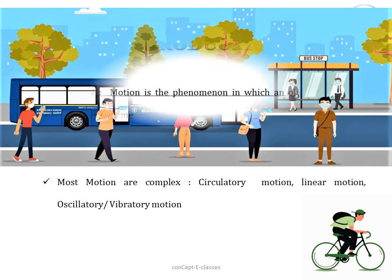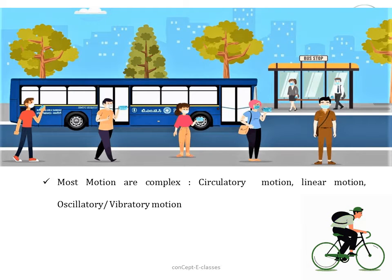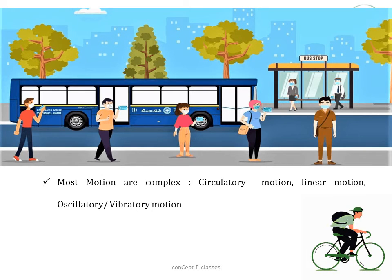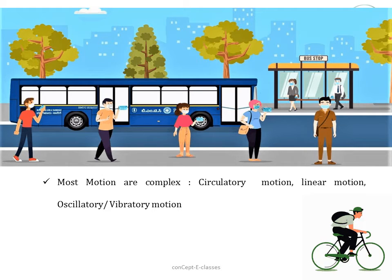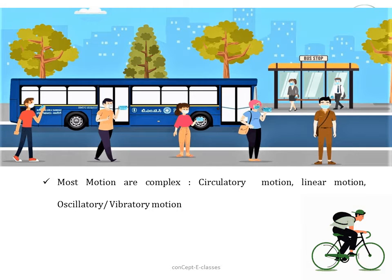Most motions are complex. For example, while sitting inside a moving bus, the roadside trees all appear to be moving backwards. A person standing on the roadside can see the bus along with the passengers moving. However, the passenger inside the bus sees the fellow passengers at rest. So from all this we can understand that motions are complex.